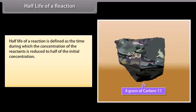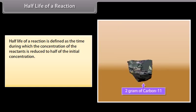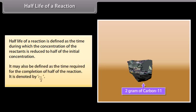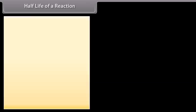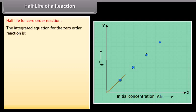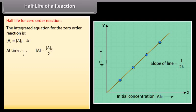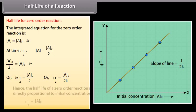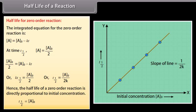Half-life of a reaction is defined as the time during which the concentration of the reactants is reduced to half of the initial concentration. It may also be defined as the time required for the completion of half of the reaction. It is denoted by T-half. For a zero-order reaction, the integrated equation is A = A₀ minus KT. At T-half, A = A₀/2. Therefore, A₀/2 = A₀ minus KT-half, giving KT-half = A₀/2, or T-half = A₀/(2K). Hence, the half-life of a zero-order reaction is directly proportional to the initial concentration.